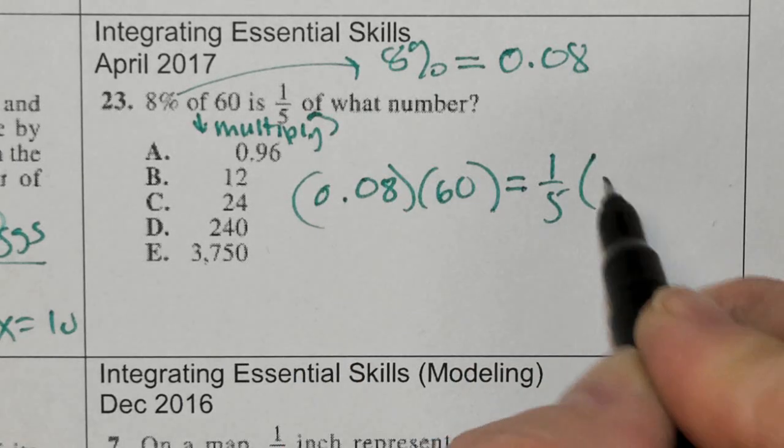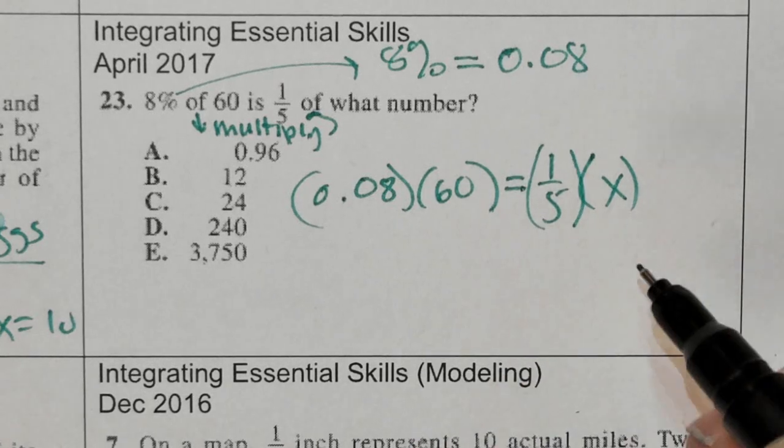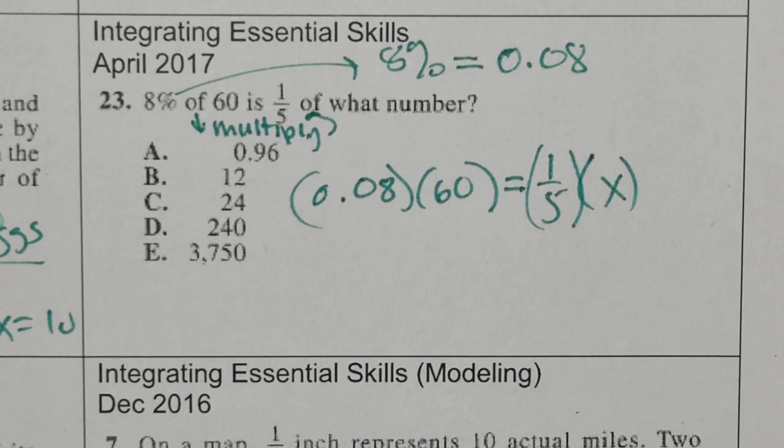Again, 'of' means multiply, and we want to know what number. So I'm trying to solve this. I grab a calculator and I'm typing in 0.08 times 60 to get an answer of 4.8.